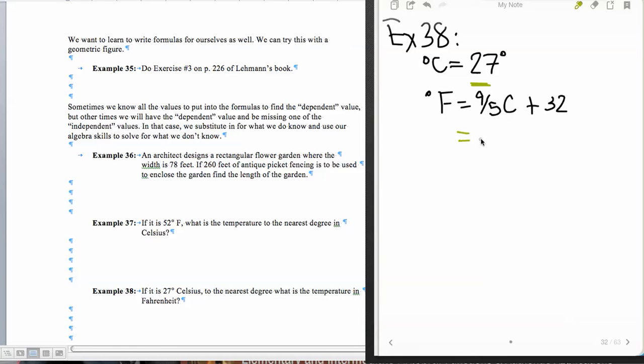That is 9/5 the Celsius degrees plus 32. So all I have to do to solve for the degrees Fahrenheit is substitution. This says 9/5 times whatever my Celsius degrees are, and my Celsius degrees are 27 in this instance, and then I'm going to add 32 to that.